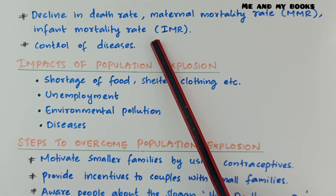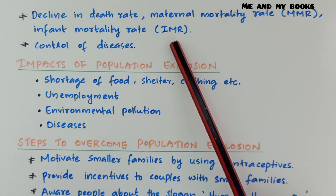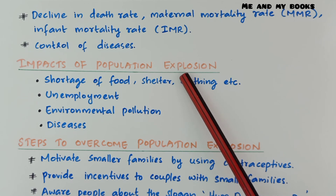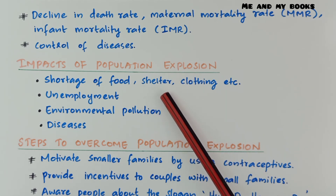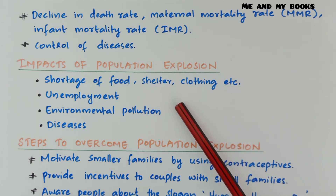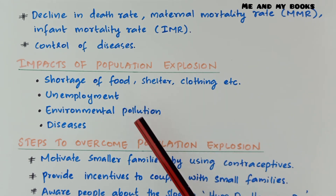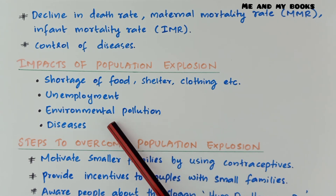What happens if population keeps increasing day by day? The impacts of population explosion include shortage of food, shelter, and clothing; unemployment; environmental pollution; and spread of diseases. These are the major impacts of population explosion.